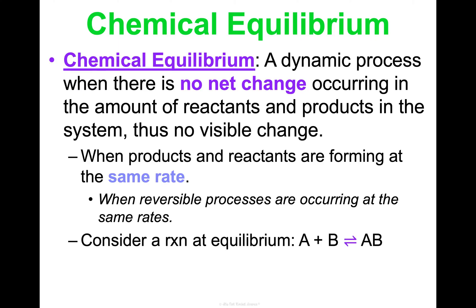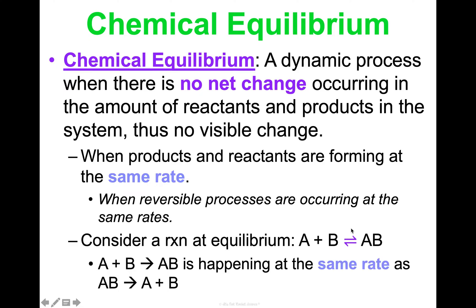Consider a general reaction in equilibrium: A plus B can yield AB, and AB can yield A plus B. In equilibrium, the synthesis reaction of A plus B yielding AB is happening at the same rate — the same speed — as the decomposition reaction of AB breaking down into A plus B.